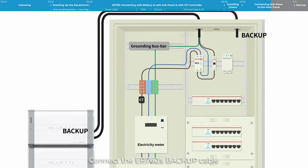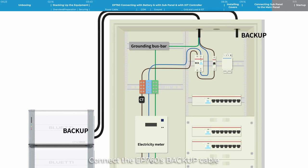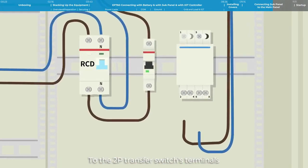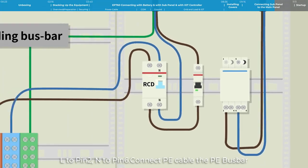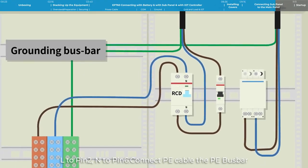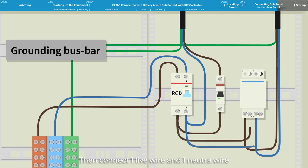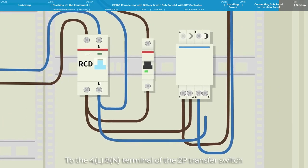Connect the EP760's backup cable to the 2P transfer switch's terminals. L to pin 2, N to pin 6. Connect PE cable to the PE bus bar. Then, connect one live wire and one neutral wire from the 2P RCD terminal to the 4, 8, N terminal of the 2P transfer switch. L to pin 4, N to pin 9.